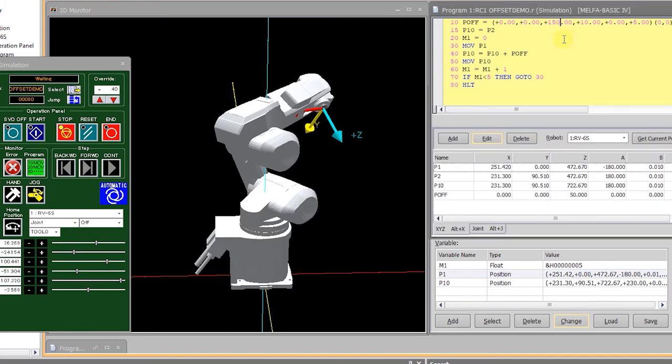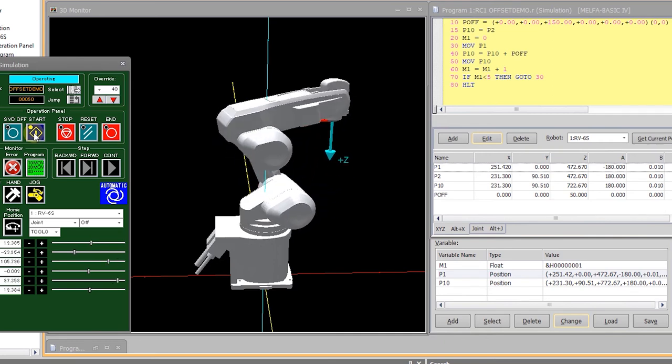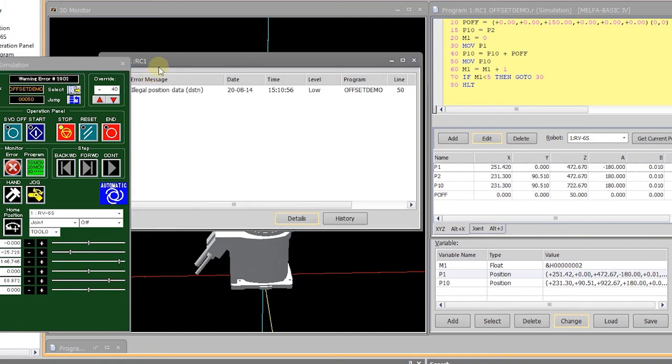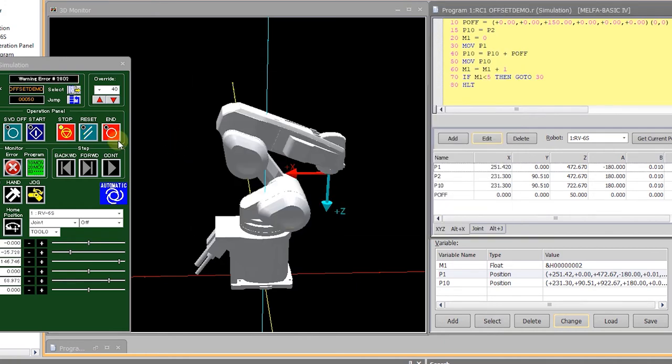One of the things you have to be careful of is setting an offset value that is cumulative and that could potentially accumulate to a value that is outside of the range of the arm. As you can see here, we have thrown an error because the arm cannot reach the position it was trying to get to. And that is what the 2802 illegal position data error is getting at.